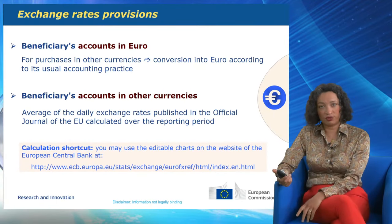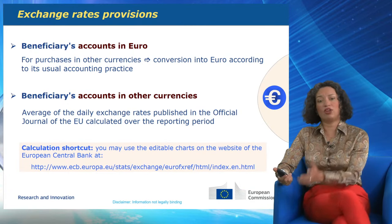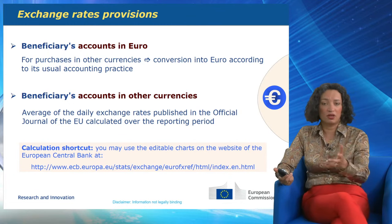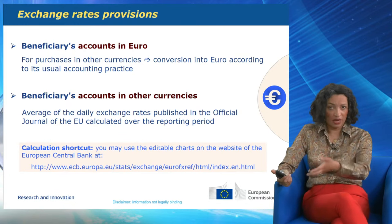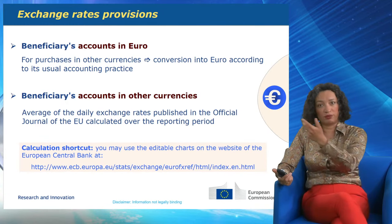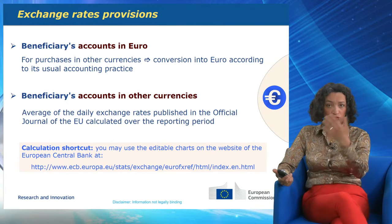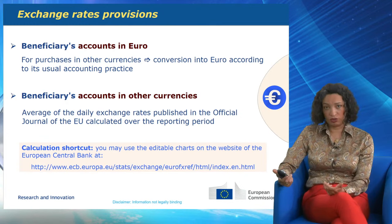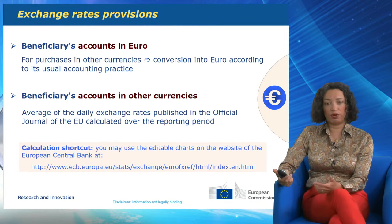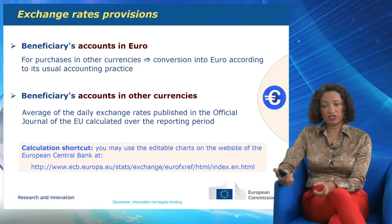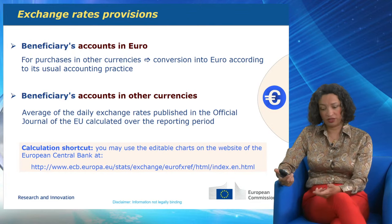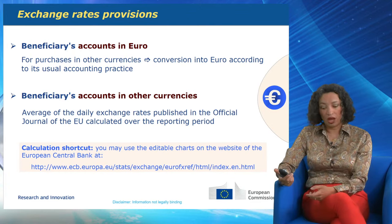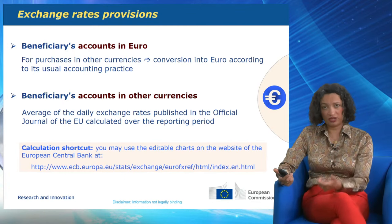On exchange rates: if your accounting is in euros, simply follow your usual accounting practice when recording purchases in other currencies, and report in euros accordingly. If your accounts are in a non-euro currency, you must convert to euros for Commission reporting using the average of the daily exchange rate published in the Official Journal of the EU, calculated over the reporting period — a link is available in the grant agreement. For adjustments to costs previously reported, use the rate applicable in the adjustment period. For costs incurred after the end of the action, use the rate applicable in the last reporting period.